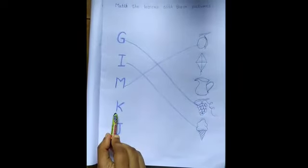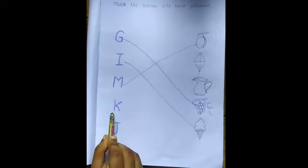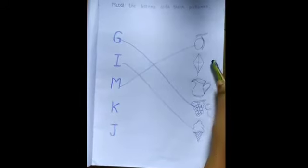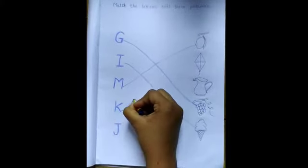This is letter K. K for what? Yes, K for kite. Can you find it? Where is kite? Yes, this is the picture of kite. Now, match it. K for kite.